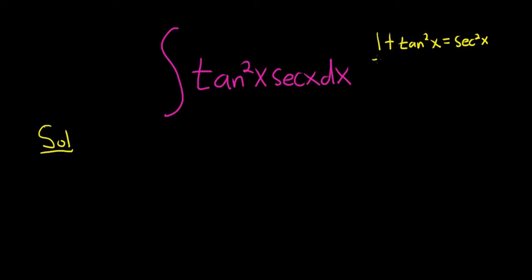So if we solve this for tangent squared by subtracting 1 from both sides, we end up with tangent squared x is equal to secant squared x minus 1. So let's go ahead and use this identity and see if anything comes from that.